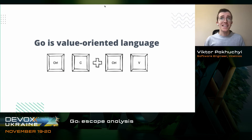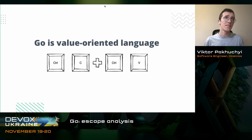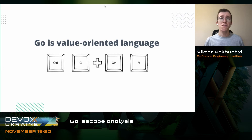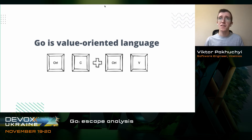The last thing from this introduction part, which we should know before talking about escape analysis, is just a reminder that Go is a value-oriented language. Every time you pass arguments from one function to another, we copy this data — pointers, structures, maps, everything will be copied. Just keep it in mind.